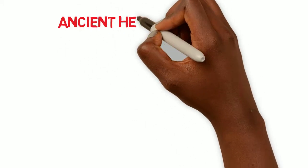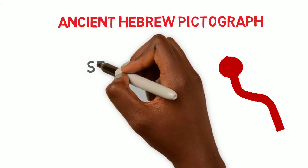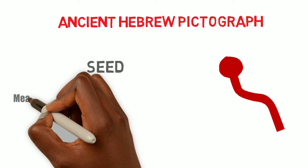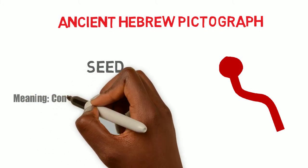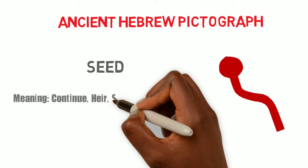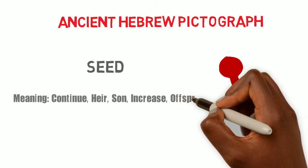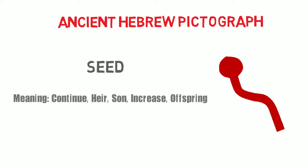Nun in the Ancient Hebrew Pictograph looks like this symbol here. It is actually a picture of a seed. As we have stated before, each Hebrew Pictograph carries a meaning and a numeric value. Nun means continue, air, sun, increase, and offspring. There are some additional meanings but we will focus on these common meanings for this lesson.